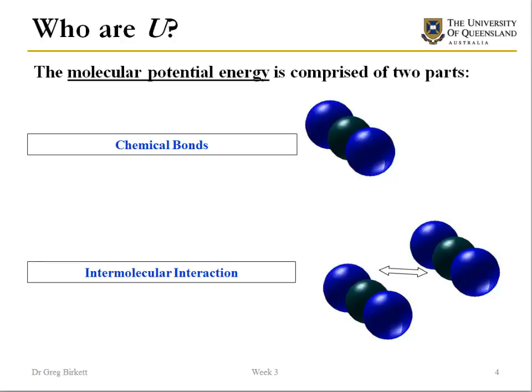The potential energy within a molecular system or a fluid is made up of the chemical bonds — these are the things that give us endothermic and exothermic reactions — and then also the intermolecular interactions: what are the interactions between molecules?